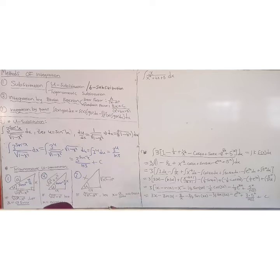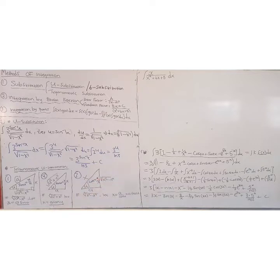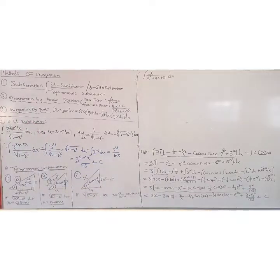Since cos(u) equals a over x, making x the subject gives x equals a over cos(u), which is a sec(u). That's why we use this substitution. Whenever we see that form, that's how this trigonometric substitution works. You just have to understand it while we do more examples.